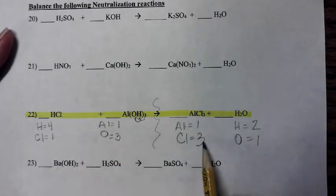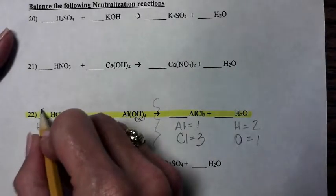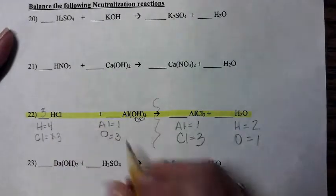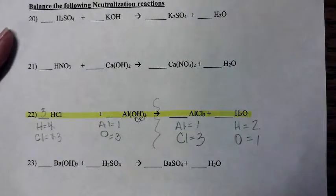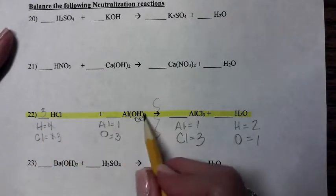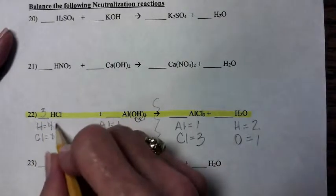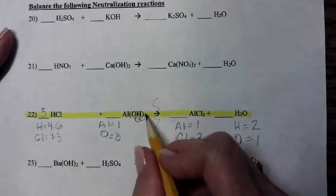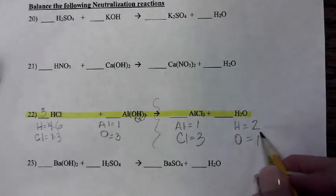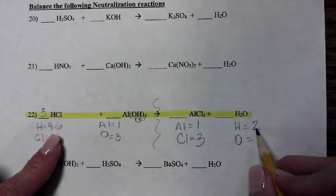So let's see what we've got here. One chlorine here, three chlorines here. Let me put a three right here. See if that'll work out for me. So that makes that a three. Look, that changes my hydrogen, though. I have three here, and I still have three here. How many is that? Three plus three is six.